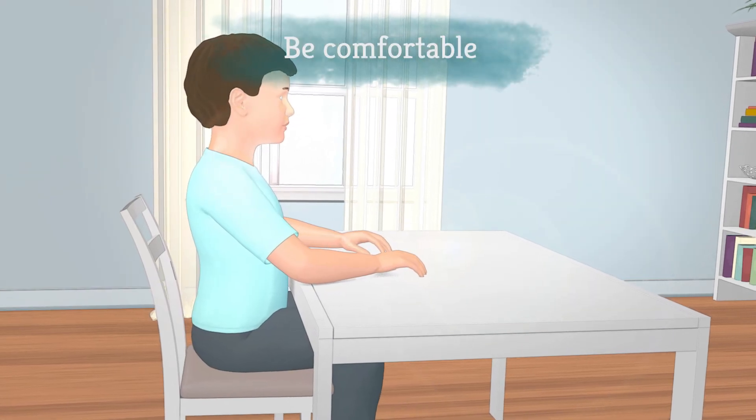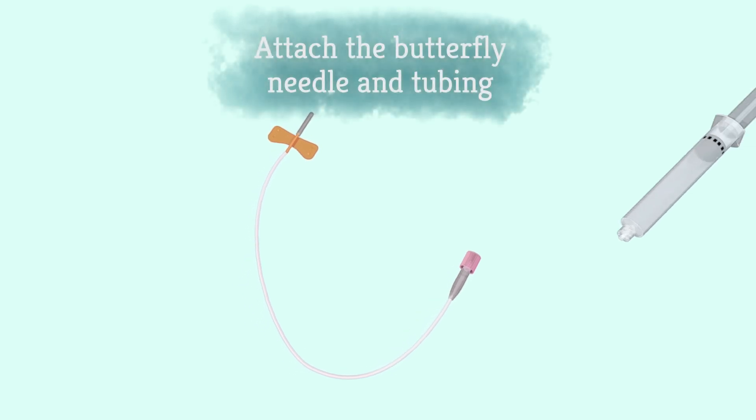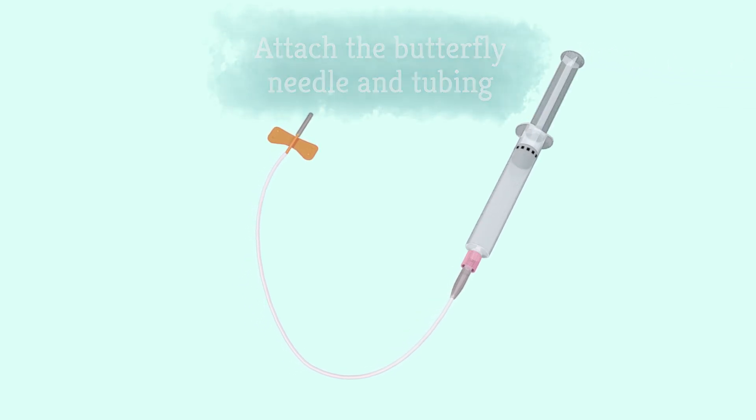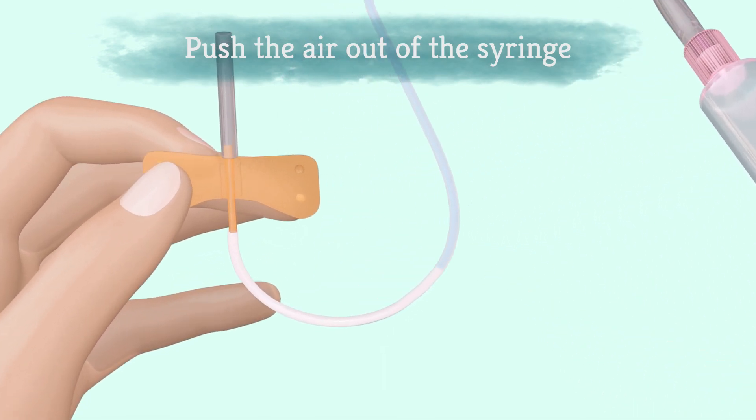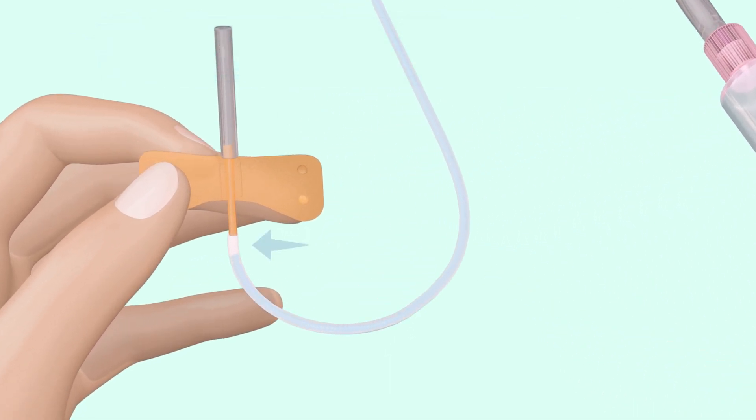Find a comfortable position. Attach the butterfly needle and tubing to the syringe of Factor. Push the plunger on the syringe so that the Factor goes almost to the end of the tubing. This pushes the air out of the syringe.